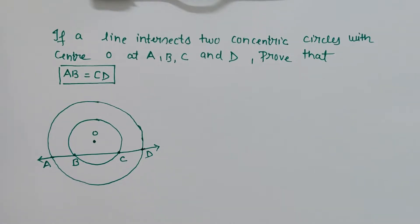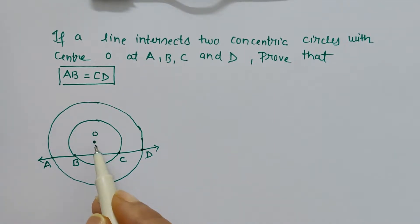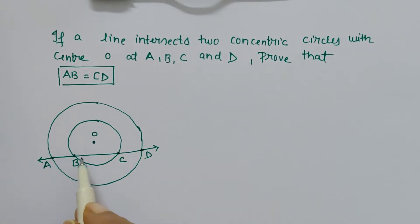Hello friends, let's solve one of the exercise problems. If a line intersects two concentric circles—concentric circles means both circles have the same center at O—and the line intersects at points A, B, C, and D, we have to prove that AB equals CD.